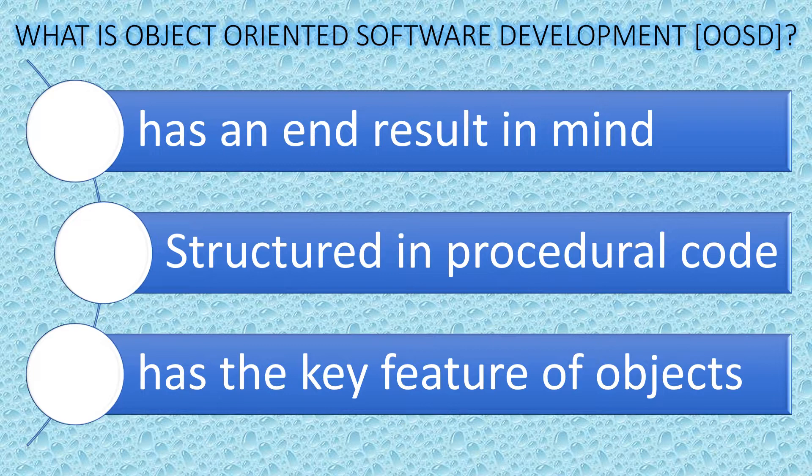What is Object Oriented Software Development, or OOSD? It is a practice of computer programming that has an end result in mind. It is the idea that objects, which contain data in the form of structured fields, are structured in procedural code, also known as methods.